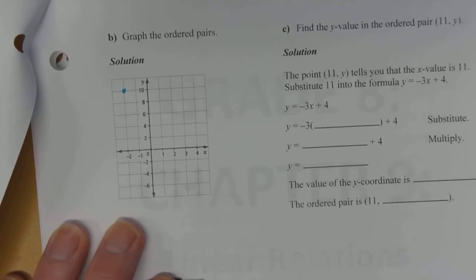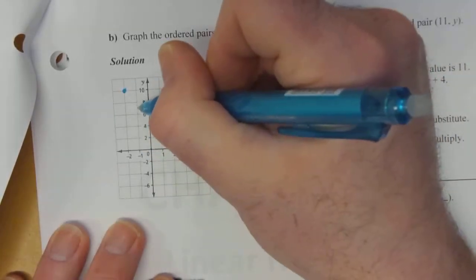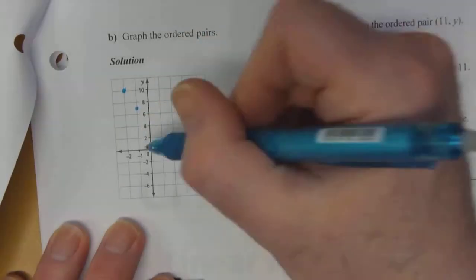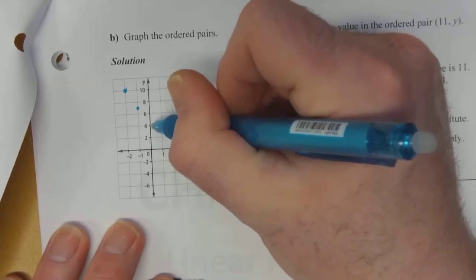The next point is negative 1 and 7. Start at the origin. Negative 1 and then 7 is halfway between 6 and 8. 0 and 4. So we don't have to go side to side on this one. We're just going to go straight up to 4.